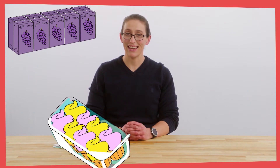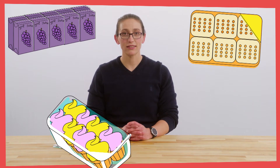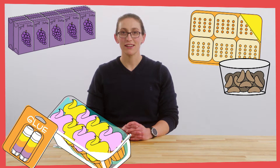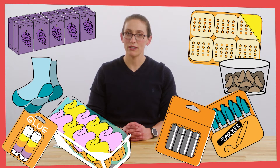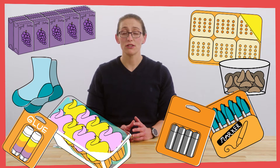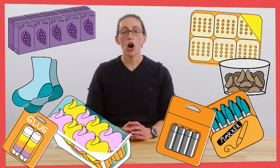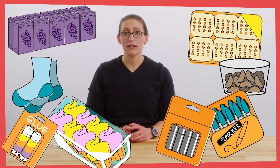I just got back from one of those big super stores where you can buy everything you need — groceries, clothes, school supplies, all at the same store. Here's what I bought today: some juice boxes, snack cakes, cracker packs, packages of nuts, glue sticks, socks, markers, and batteries. What do you notice about the way they are all packaged? That's right — all of these items are packaged in groups.